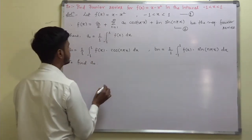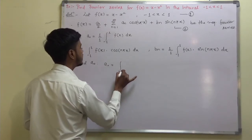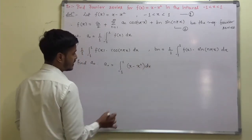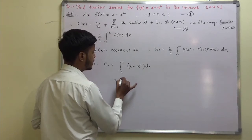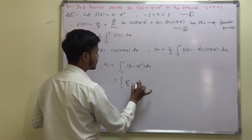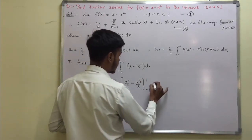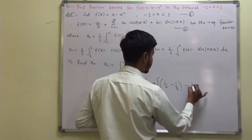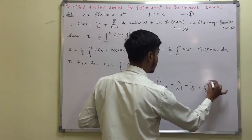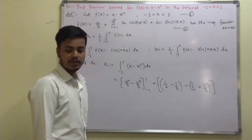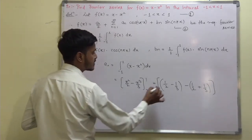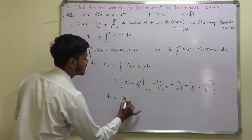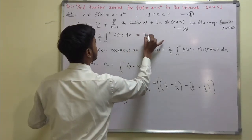To find a₀: a₀ = ∫₋₁¹ (x − x²) dx. Evaluating this gives [x²/2 − x³/3] from −1 to 1, which is (1/2 − 1/3) − (−1/2 + 1/3). The 1/2 terms cancel and we get −1/3 − 1/3, so a₀ = −2/3.